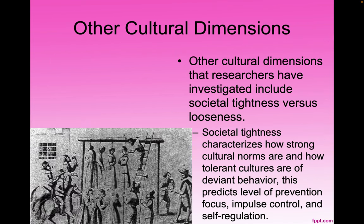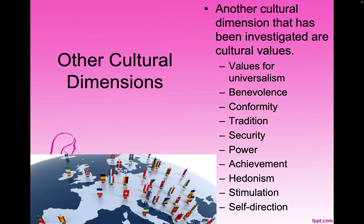Other cultural dimensions that researchers have investigated include societal tightness versus looseness — societal tightness characterizes how strong cultural norms are and how tolerant cultures are of deviant behavior, predicting level of prevention focus, impulse control, and self-regulation. Other cultural dimensions include values for universalism, benevolence, conformity, tradition, security, power, achievement, hedonism, stimulation, and self-direction.